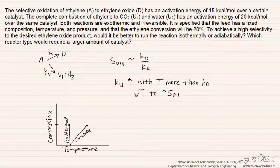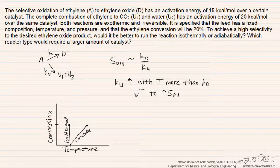And so if selectivity is the main issue, then we would want to run isothermally in this case. The second part of the question asks which reactor type would require a larger amount of catalyst.